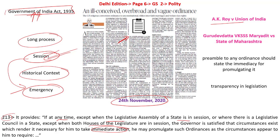Going back to Article 213, when can an ordinance be created? When the house is not in session, when there is a circumstance that arises for which law is a necessity, and when immediate action has to be taken by the executive. The Supreme Court says that whenever an ordinance is passed, it should not be used recklessly or under an imaginative state of affairs. There has to be an exigency and absolute necessity of that legislation. If there is no necessity, no circumstance, and no immediate action required, then the ordinance is not required, says A.K. Roy versus the Union of India.